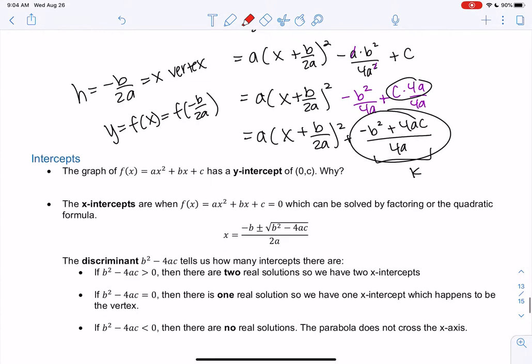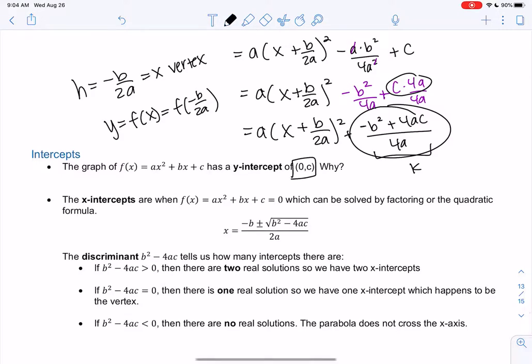A few more refreshers, and then we'll do examples. So we have the y-intercept of 0c. That's always true, because if I plug in 0, the first two terms disappear.